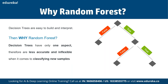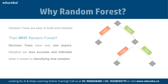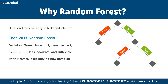Before discussing random forest in depth, we need to understand how decision trees work. Consider this analogy: we want to buy a house but can't decide which one. We consult agents who give us a list of parameters to consider — price of the house, locality, number of bedrooms, parking space, and available facilities. These parameters are called predictor variables, used to find the response variable.